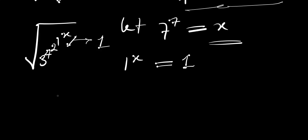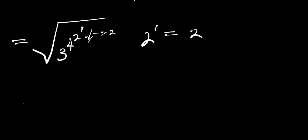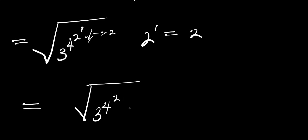Now we are going to have 3^4^2, and 1^x becomes 1. The next thing is to consider 2^1 again. We have 2^1, and this equals 2, so we replace 2^1 with 2. That means we are going to have 3^4^2.